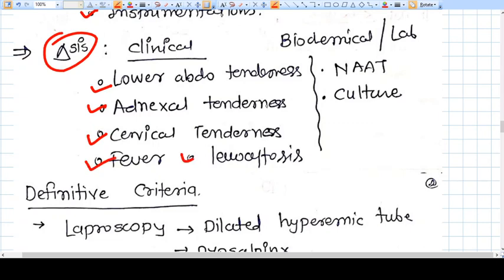And other markers of inflammation, biochemically you can investigate using nucleic acid amplification test (NAAT) and culture of the discharge or culture of particular tissue or biopsy from the endometrium. This biochemical testing is generally not done in general practice.